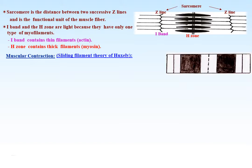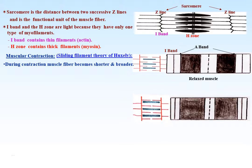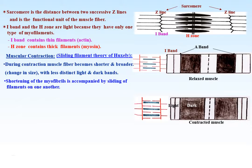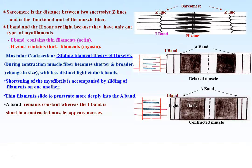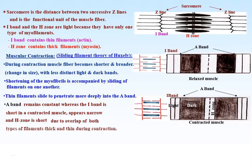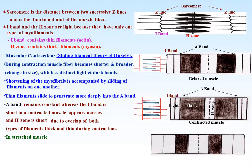Muscular contraction — the sliding filament theory: during contraction the muscle fiber becomes shorter and broader, with less distinct light and dark bands. Shortening of the myofibrils is accompanied by sliding of the filaments on one another. The thin filaments slide to penetrate more deeply into the A band, which remains constant. The I band becomes narrow in contracted muscle, and the H zone shortens as a result of overlap of both thick and thin filaments during contraction.